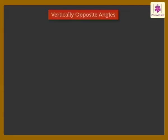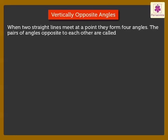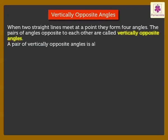Next is Vertically Opposite Angles. When two straight lines meet at a point, they form four angles. The pairs of angles opposite to each other are called vertically opposite angles. A pair of vertically opposite angles is always equal in measure.